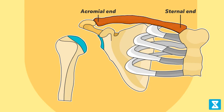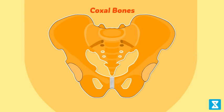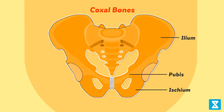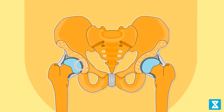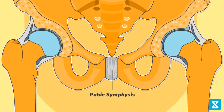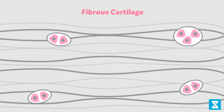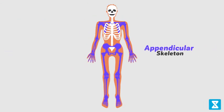The pelvic girdle consists of two coxal bones. Each coxal bone is formed by the fusion of three bones: ilium, ischium, and pubis. At the point of fusion is a cavity called the acetabulum, to which the thigh bone articulates. The two halves of the pelvic girdle meet ventrally to form the pubic symphysis, containing fibrous cartilage. This completes the appendicular skeleton.